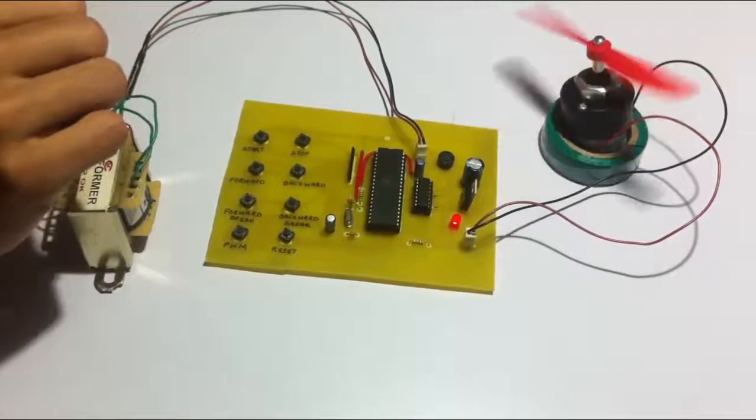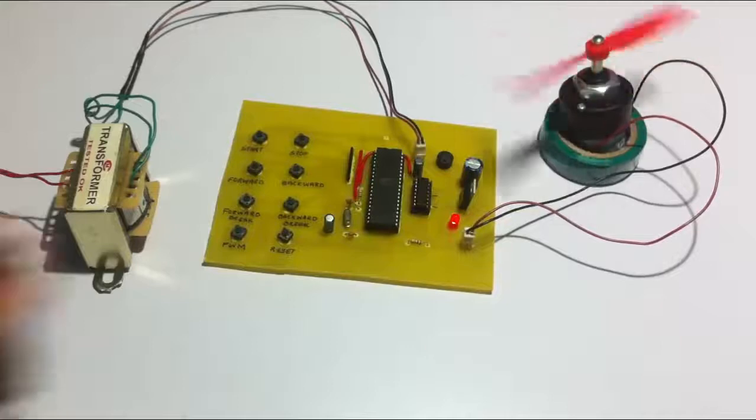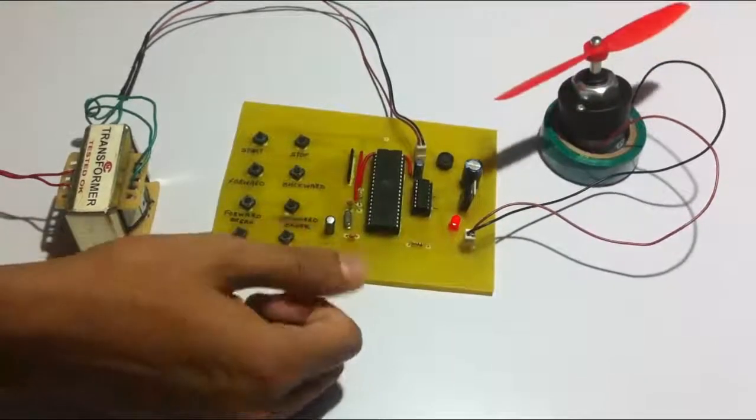So this is how the four quadrant DC motor speed control project works. Thank you.